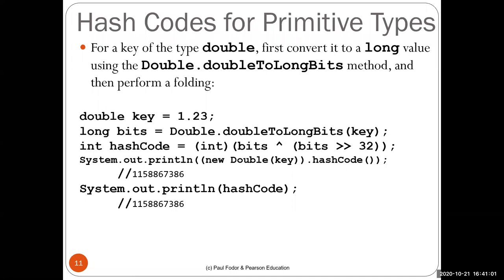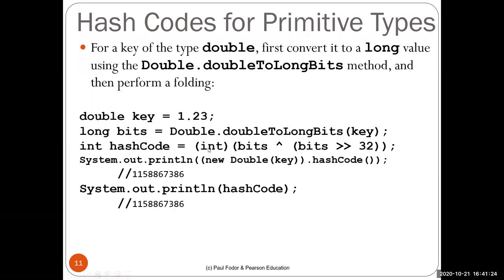For double, the process is similar. Doubles occupy 8 bytes, so you first convert to long using Double.doubleToLongBits(), then apply the same folding XOR operation used for long and cast to int. This gives the hash code for the double value.